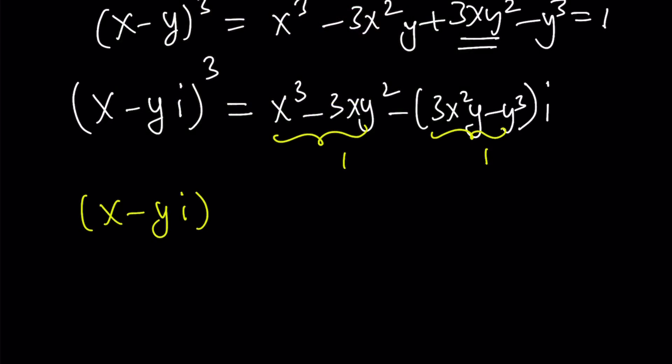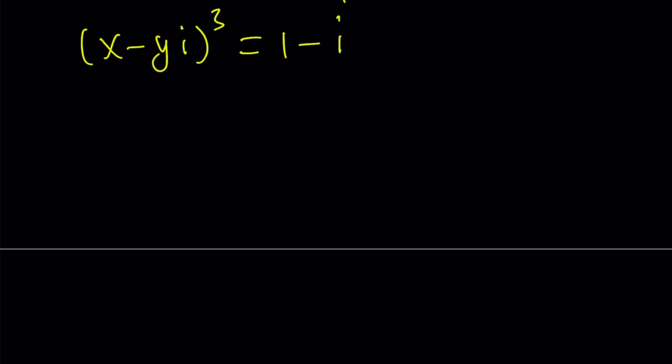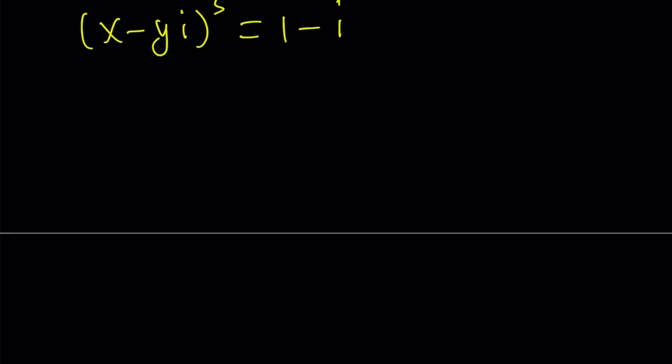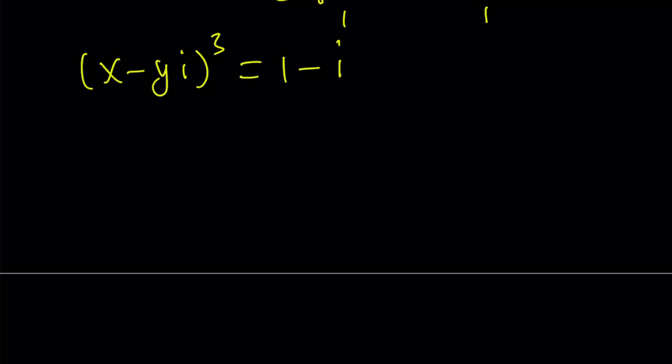So we need to find the cube roots of 1 minus i, and there are three of them. The others can be easily obtained by adding multiples of 2 pi over 3, because on the complex plane the cube roots of a complex number are equally spaced, separated by 2 pi over 3 radians apart.